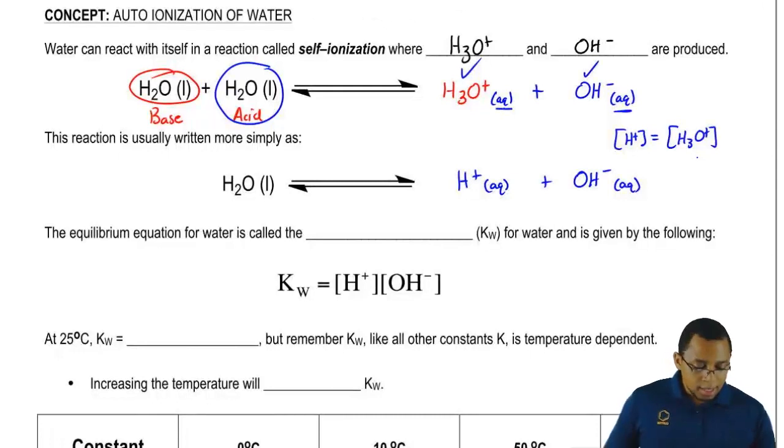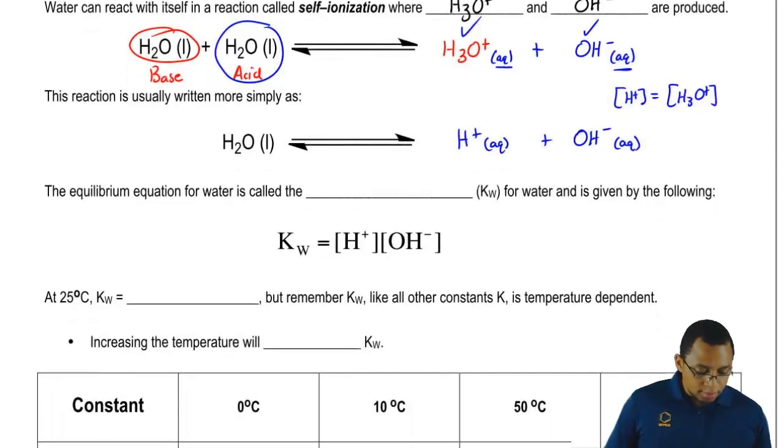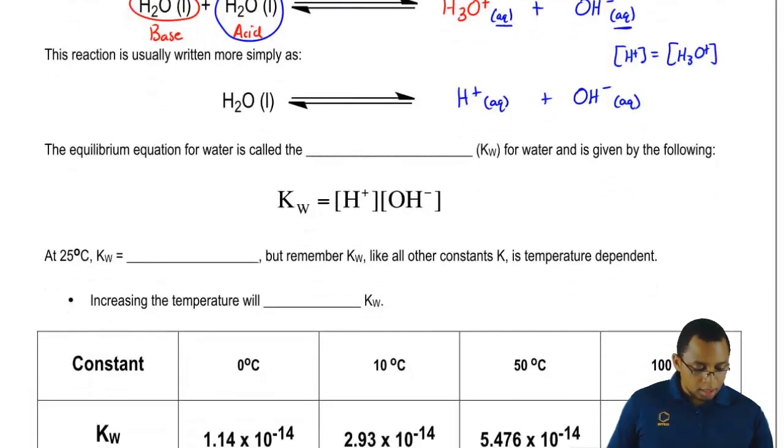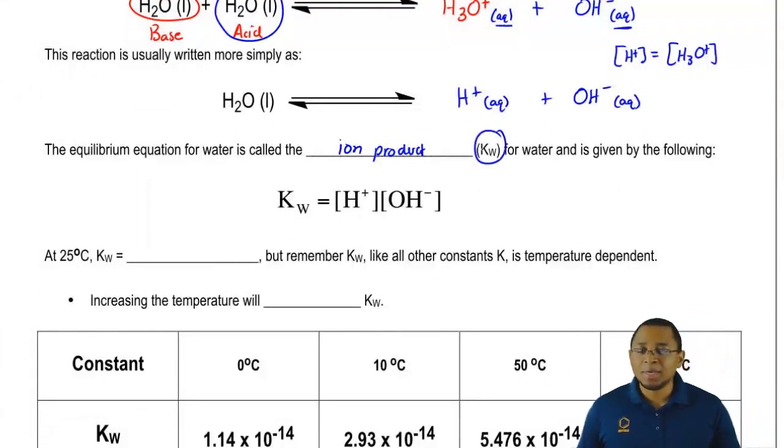The equilibrium equation for water is called the ion product. The ion product is simply said to be Kw. When we're talking about the Kw for water, we're talking about the ion product of water.